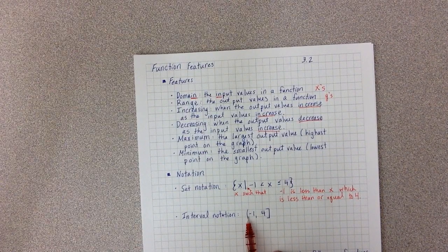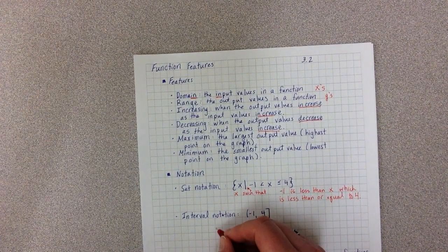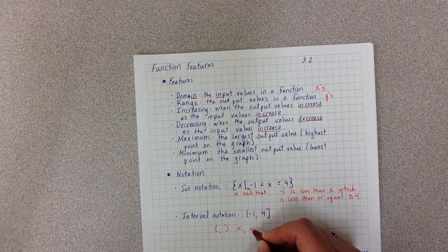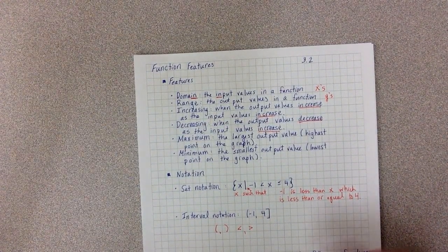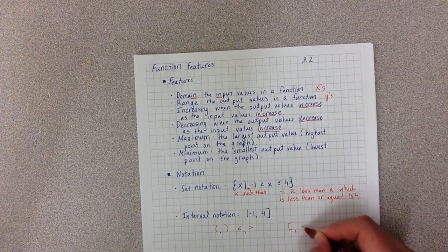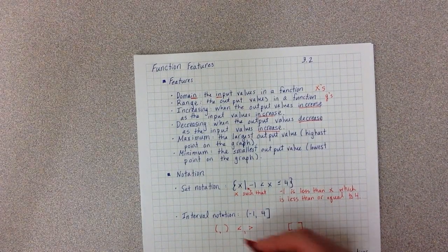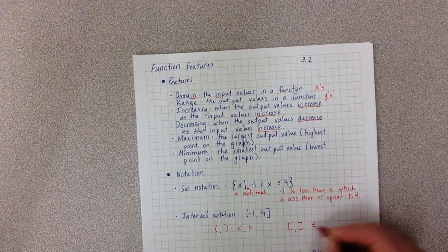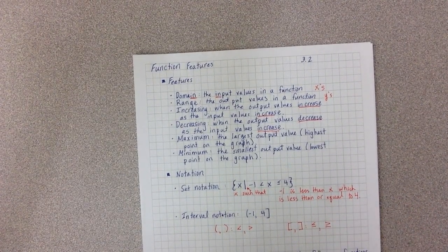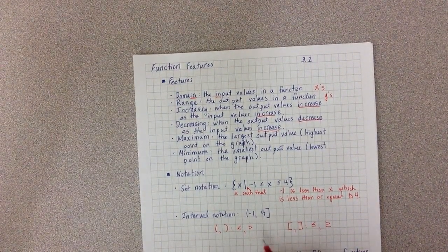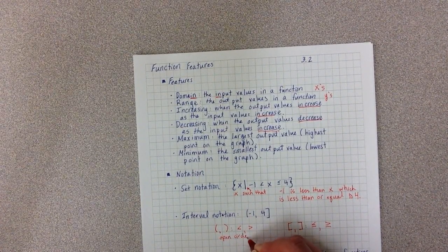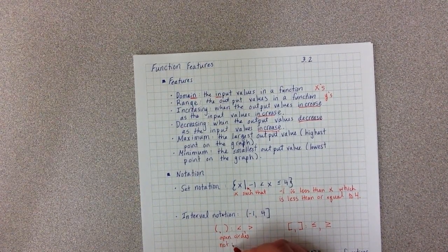Parentheses are going to be used when I have less than or greater than. And brackets are going to be used when I have less than or equal to and greater than or equal to.